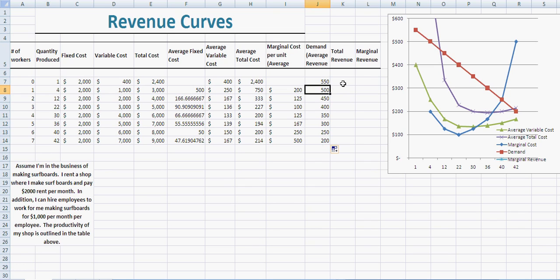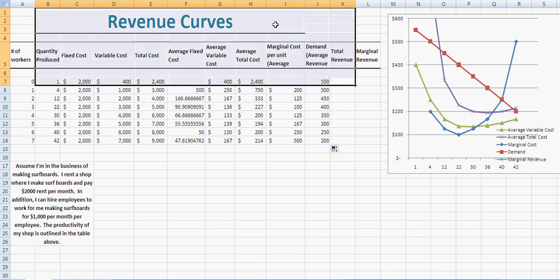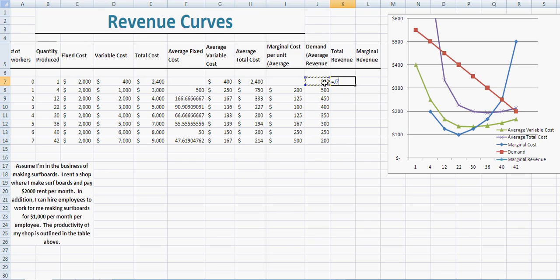So then we get total revenue, which is just equal to average revenue times our quantity. So you get $550 for one surfboard, you make $550. You get $500 for four surfboards, you get $2,000. And dragging this all the way down, that's our total revenue for any of these production and price combinations.